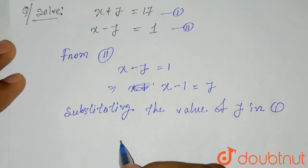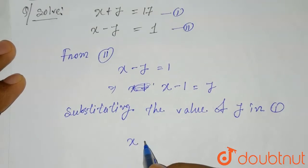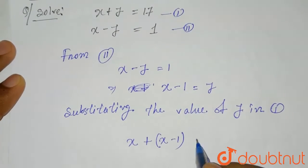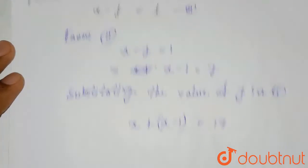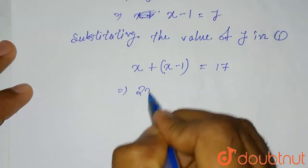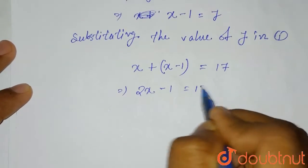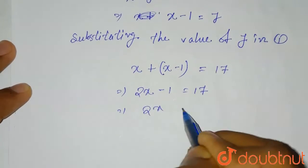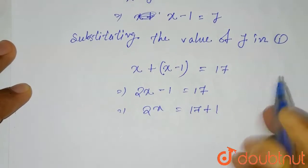We'll get x plus y, means x plus (x minus 1), equals 17. Or from here, 2x minus 1 equals 17, or 2x equals 17 plus 1, that means 18.